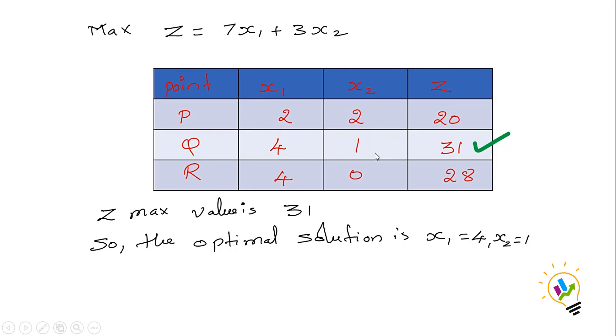This is how we find the optimal solution for a linear programming problem with mixed constraints using the graphical method. Thank you.